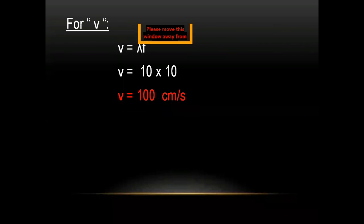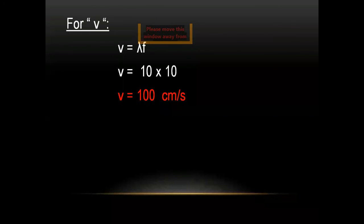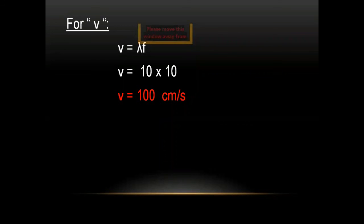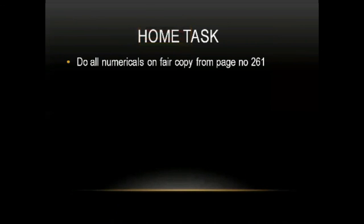For velocity, we use v = fλ. Frequency is 10 Hz and wavelength is 10 cm, so v = 10×10 = 100 cm/s. Take a screenshot, and now we are going to share the home task.